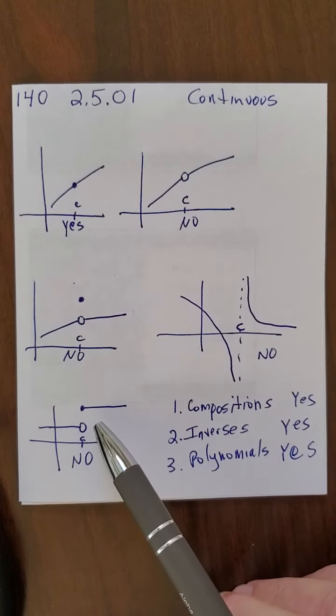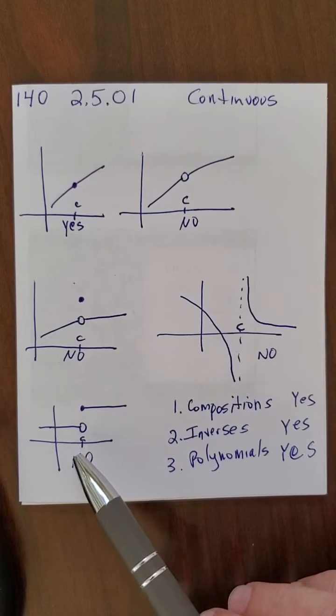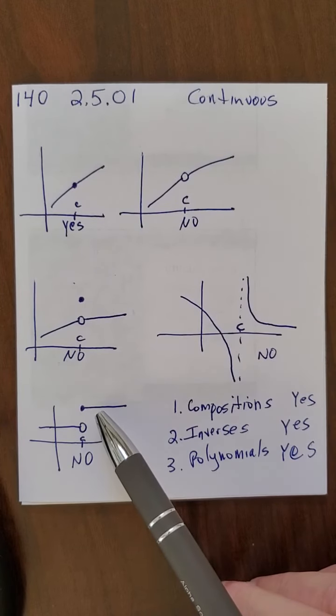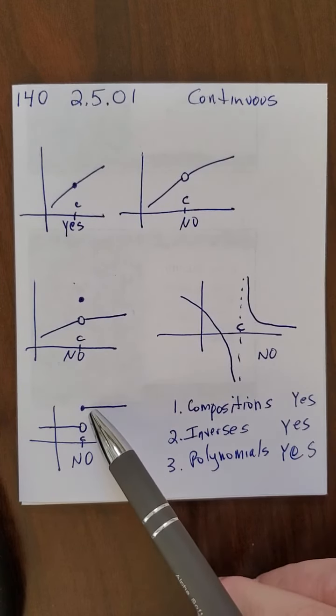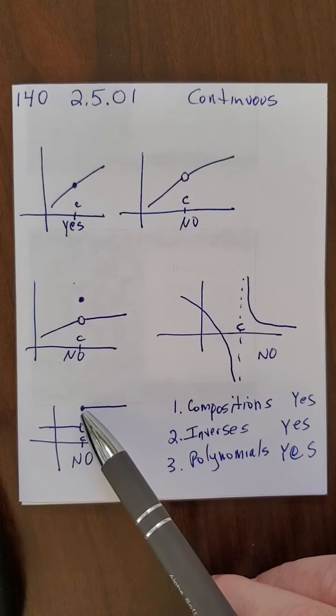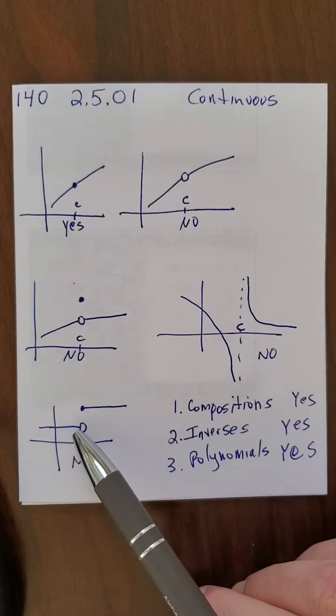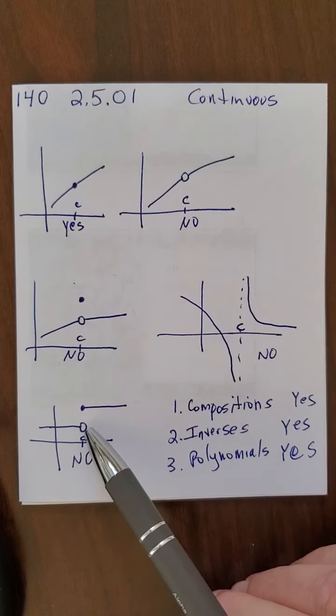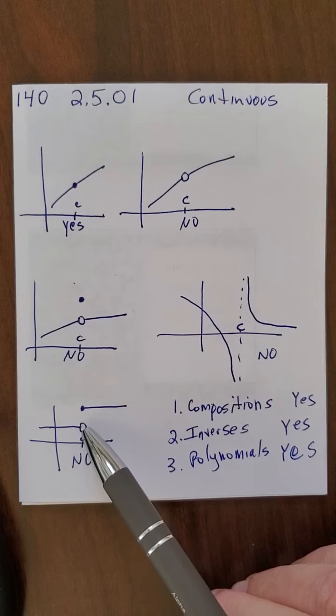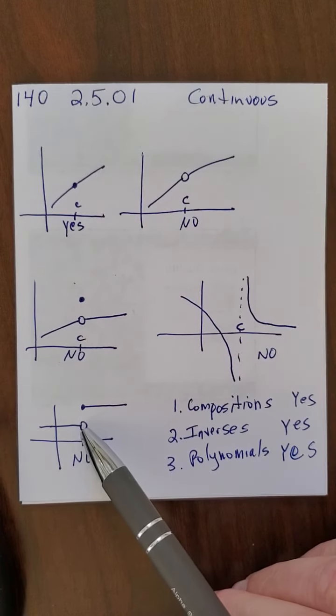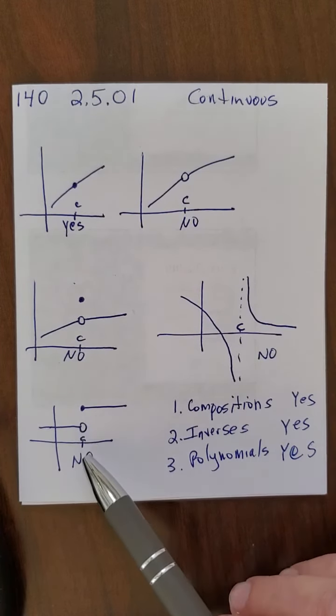But there is this idea of right-handed continuous and left-handed continuous. This one is right-handed continuous, because as I approach C, I have a function value, and the function equals that value. It's not left-handed continuous, because as I approach from this side, the function value would be this value, but the function doesn't equal that value at the point C.